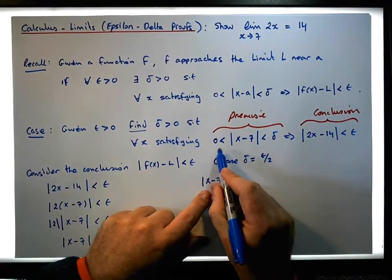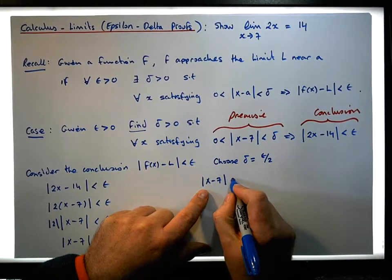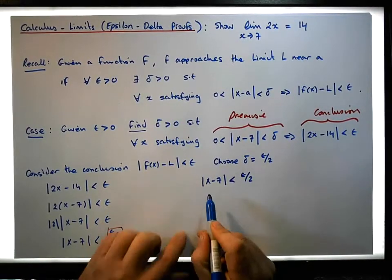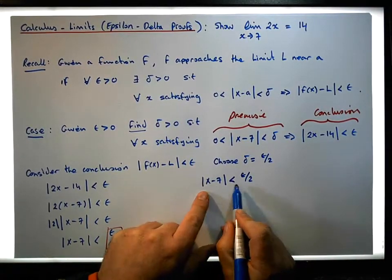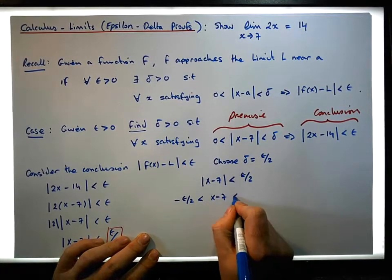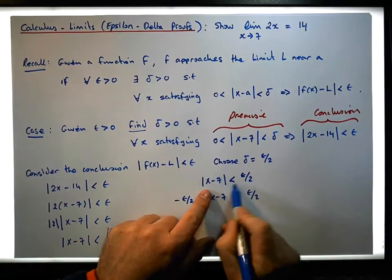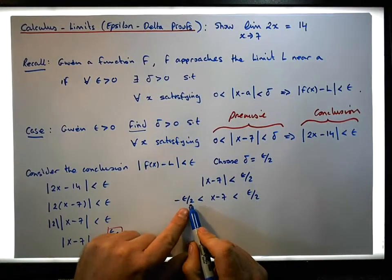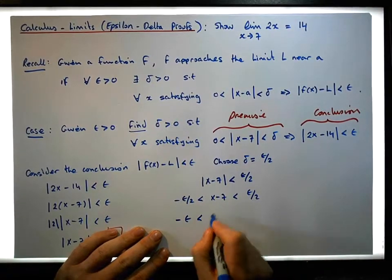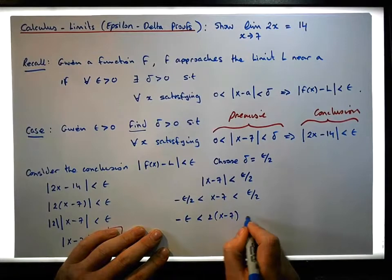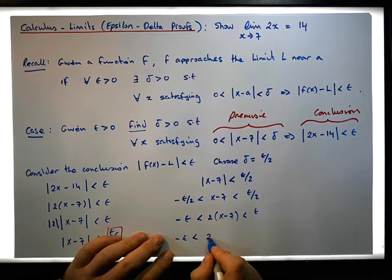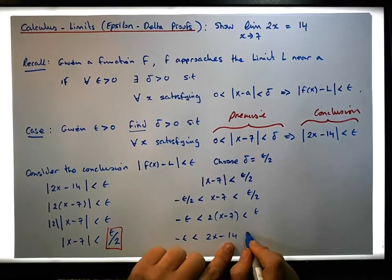So from this particular fact here, we have the absolute value of x minus seven has to be less than delta, but delta we've just chosen to be epsilon over two. Now let's expand out this absolute value on the inequality. This becomes minus epsilon over two must be less than x minus seven, which is less than epsilon over two. That's exactly what this absolute inequality is saying. Let's multiply across all terms by positive two, so this becomes minus epsilon is less than two times x minus seven, which is less than epsilon. Let's multiply out the brackets: minus epsilon is less than two x minus 14, which is less than epsilon.